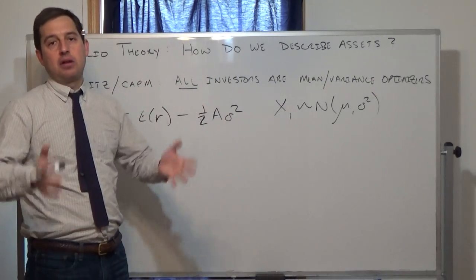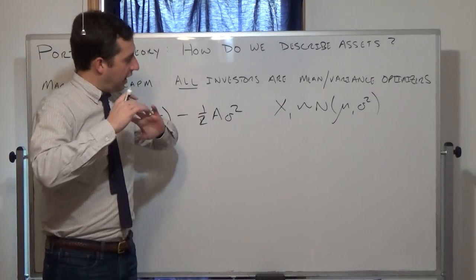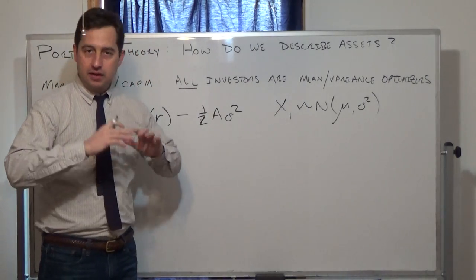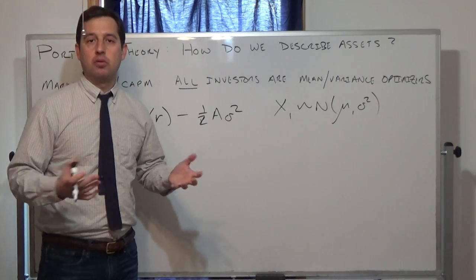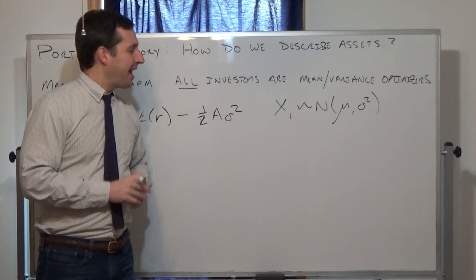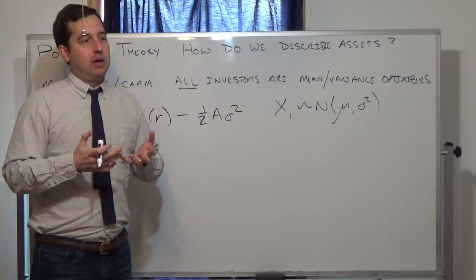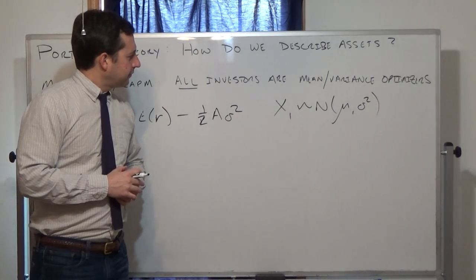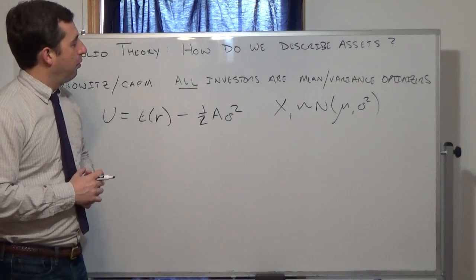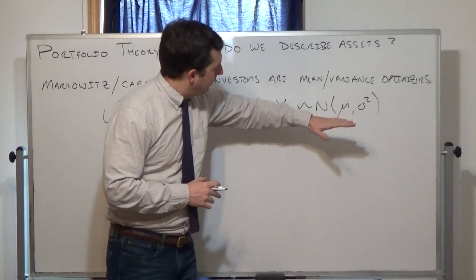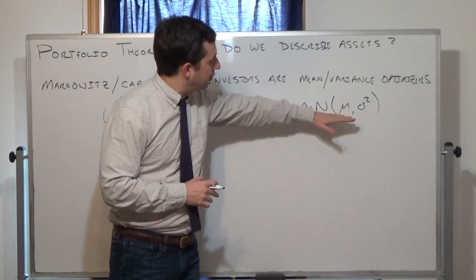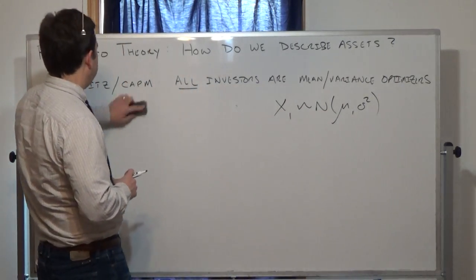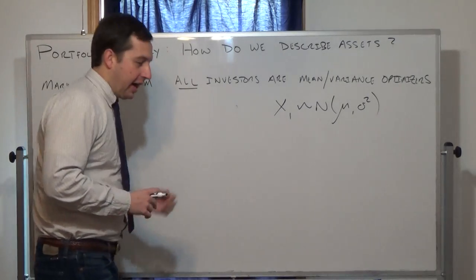In reality the distribution could be any member of the class of elliptical distributions, but quadratic utility and mean-variance optimization imply we use the normal distribution. Now, once we assume normality, there are specific reasons why we like the normal distribution for portfolio theory.